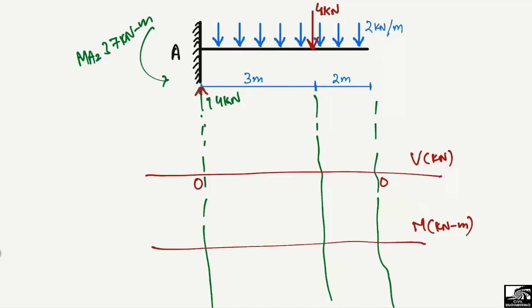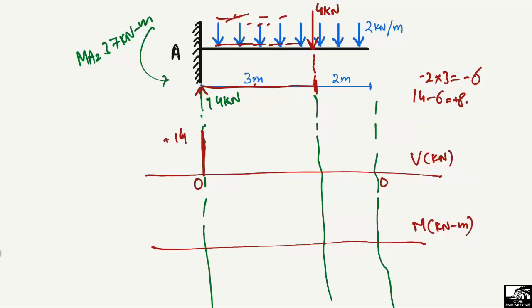Starting the shear force diagram: RA equals fourteen kilonewton acting upward, so the shear force jumps up to positive fourteen. The uniformly distributed load of two kilonewton per meter acts downward over the first three meters up to the point load location, giving minus two multiplied by three equals minus six. So fourteen minus six equals positive eight at the point load location.